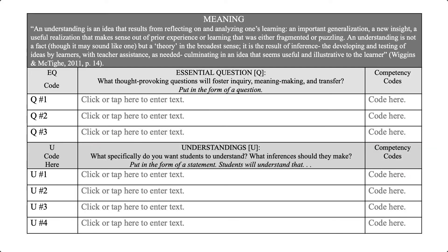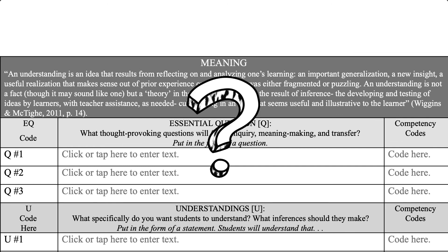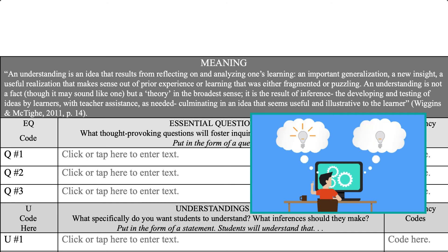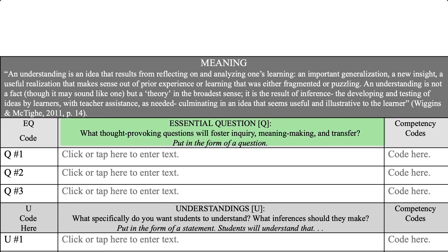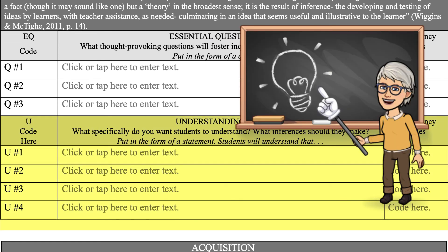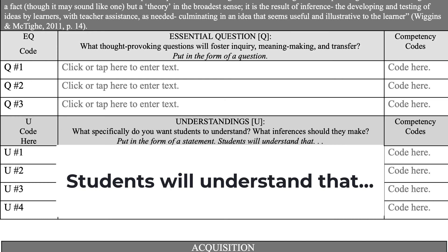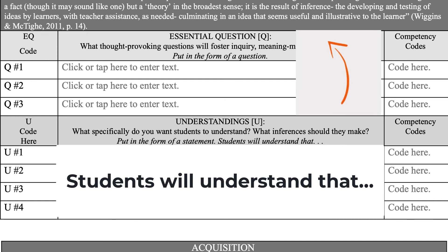When we look at the meaning section, we break it down into essential questions and understandings. With essential questions, we provide thought-provoking, open-ended questions that will foster inquiry for the students — questions that help them make meaning and transfer new information, think about what the content is and why it's important, and consider how it affects their lives and others' lives. These don't necessarily have a right or wrong answer; they allow students to explore the content on their own, and we connect each essential question to a competency. Then, for understandings, we state specifically what we want students to understand — 'students will understand that' — and these understandings are what allow students to answer those essential questions.